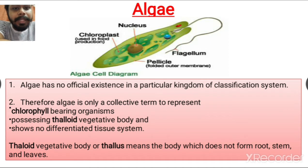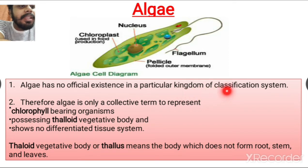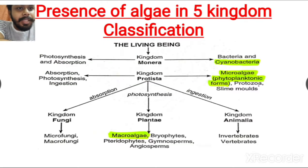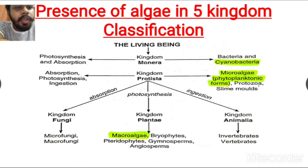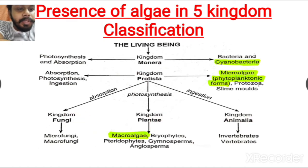First, we have to know that algae has no official existence in any particular kingdom of classification. Here we can see a five kingdom classification system, where all living organisms are classified according to their characteristics into five kingdoms: Monera, Protista, Fungi, Plantae, and Animalia.